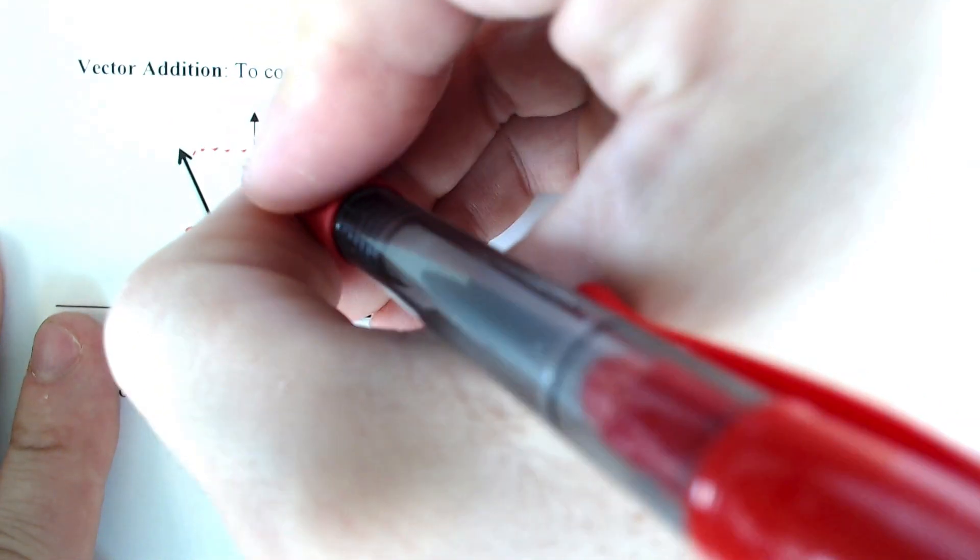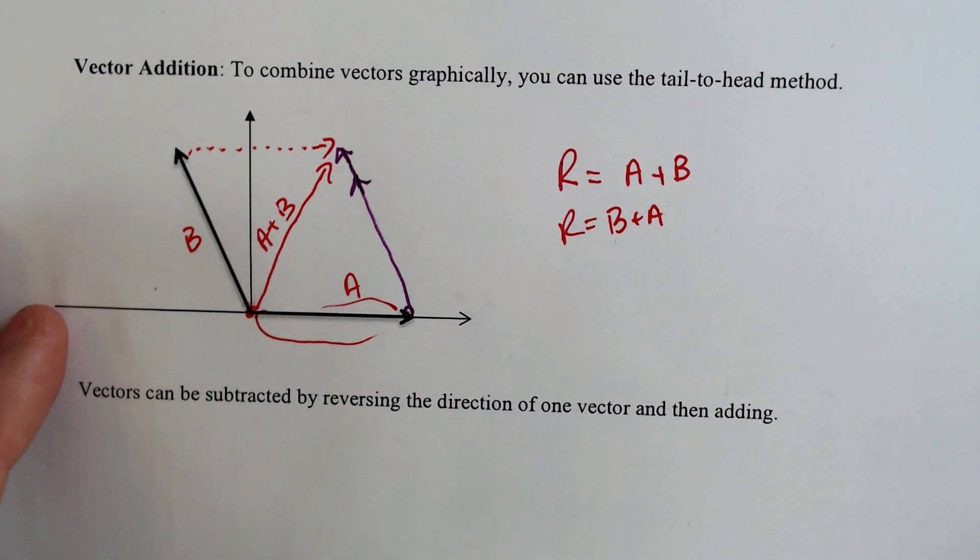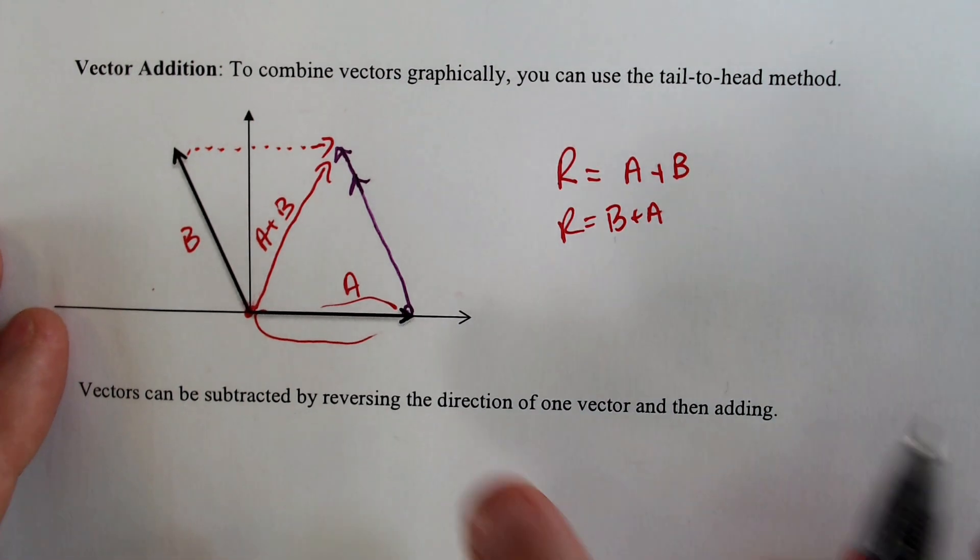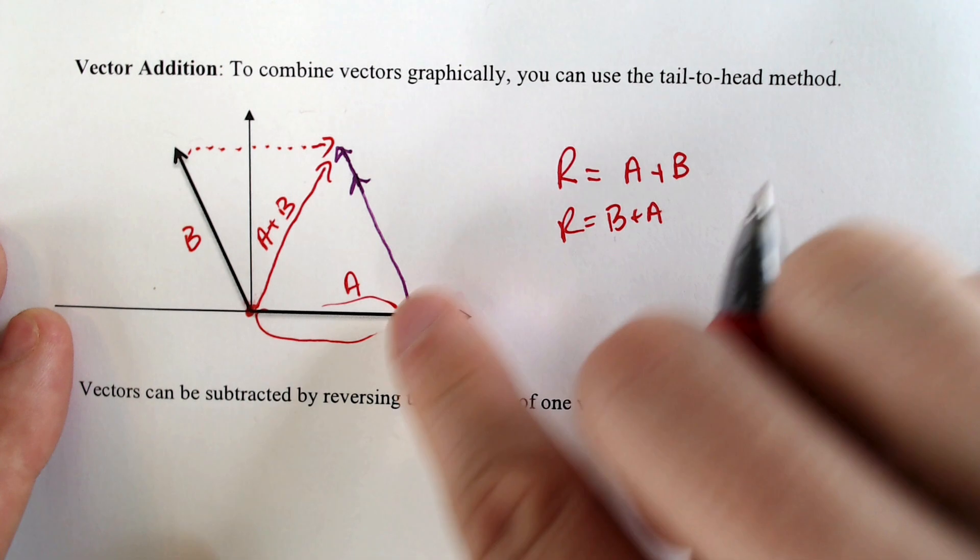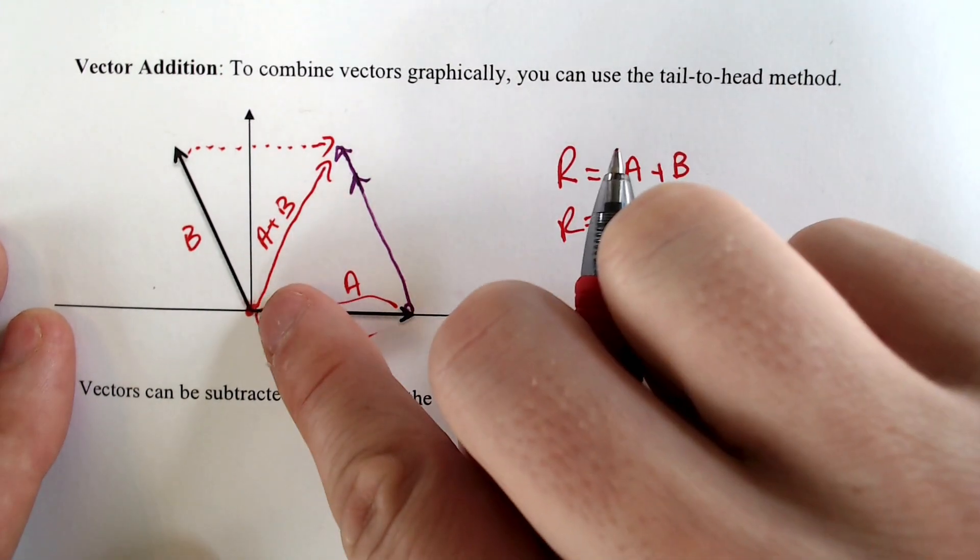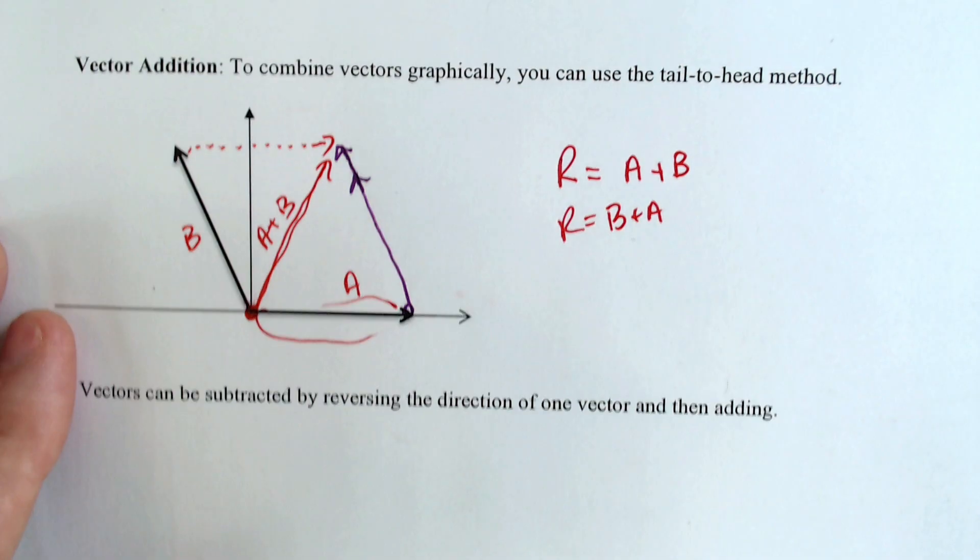And it would end up in the exact same location. So adding vectors is commutative, but make sure that you recognize that this triangle shape, this A plus B is not the actual answer. So the A plus B is whenever you go from the origin back to that point.